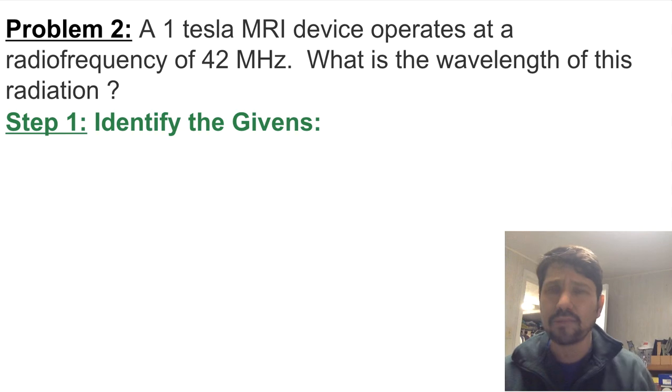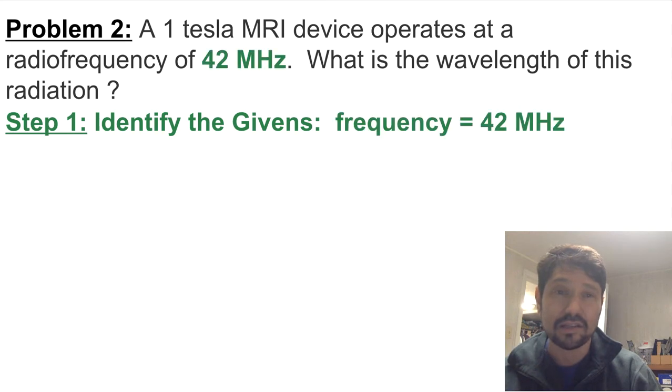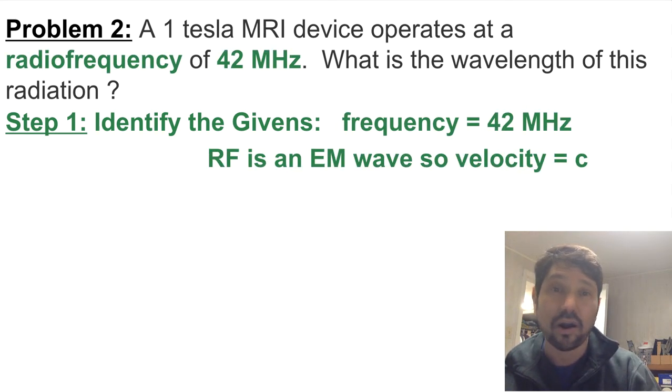Here's problem two. A 1 tesla MRI device operates at a radio frequency of 42 MHz. What is the wavelength of this radiation? We'll identify our givens: the frequency is 42 MHz and it's an RF wave, so it's an electromagnetic wave, so its velocity will equal the speed of light. We're not going to use that 1 tesla—I mean that's how strong the magnet is and that has nothing to do with the math required to calculate the wavelength, so that's just thrown in to mess you up.